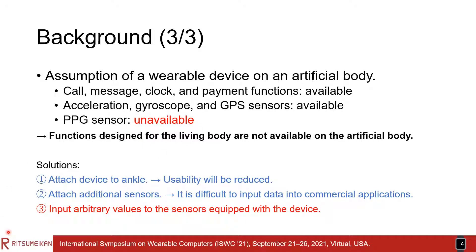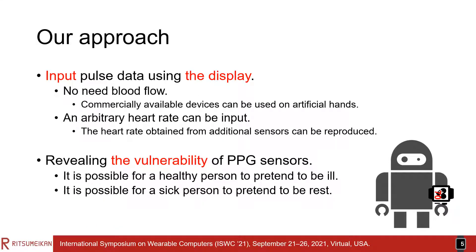We can think of several methods to solve this problem, but another problem may arise. The best solution we can think of is to let the sensor equipped with the device lead to arbitrary values. This method requires users to wear an additional device, but does not require any modification to the smartwatch or application. Our method inputs values to the PPG sensor without using blood flow, so users with an artificial body can also use commercially available wearable devices and applications.